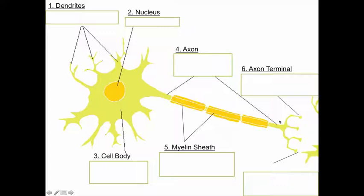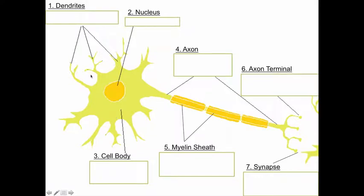We have four axon terminals visible here — that's one entire axon and all of its parts. Here's the start of the next neuron, with the little branches visible off to the side. Neurons don't actually touch each other; there's a space between one neuron and the next. That space or gap is called a synapse. So to summarize: short branches are dendrites, you have the cell body and nucleus, long branches are axons, surrounding the axons is the myelin sheath, the ends are axon terminals, and the space between neurons is the synapse.